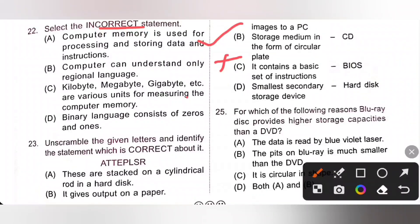C, kilobyte, megabyte, gigabyte, etc. are various units for measuring the computer memory. It is also correct statement. D, binary language consists of zeros and ones. It is also correct statement. So the incorrect statement is option B.